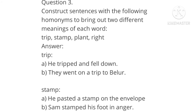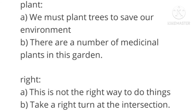Construct sentences with the following homonyms to bring out two different meanings of each word. Trip: 'He tripped and fell down' / 'They went on a trip to Belur.' Stamp: 'He pasted a stamp on the envelope' / 'Sam stamped his foot in anger.' Plant: 'We must plant trees to save our environment' / 'There are a number of medicinal plants in this garden.' Right: 'This is not the right way to do things' / 'Take a right turn at the intersection.' These are called homonyms.